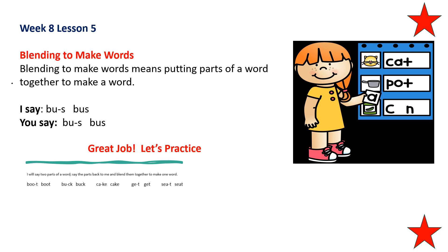Now let's practice. Repeat after me: buh, t — boot. Good job. Repeat after me: buh, kuh — buck. Repeat after me: cake. Repeat after me: guh, t — get. Repeat after me: seat. Nice job.